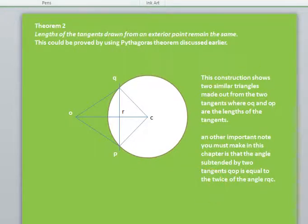Theorem two. Lengths of the tangents drawn from an exterior point remain the same. That is what I was explaining to you in the previous diagram. This could be proved by using Pythagoras theorem as discussed earlier.